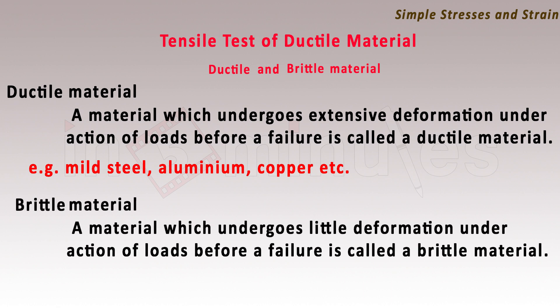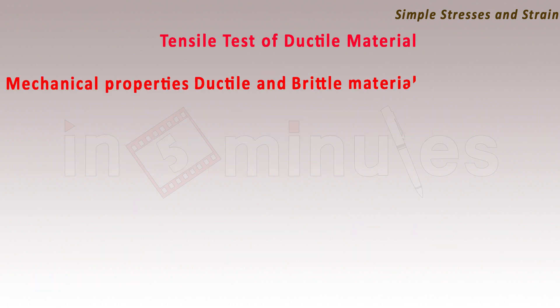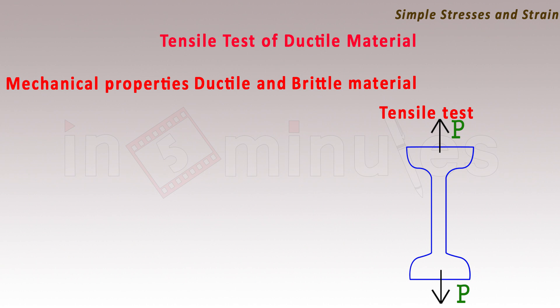Brittle material is a material which undergoes little deformation under the action of loads before failure. An example is cast iron. Mechanical properties of most materials, whether ductile or brittle, can be easily studied by a test called as tensile test.